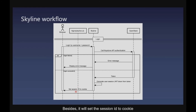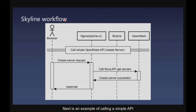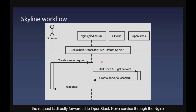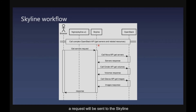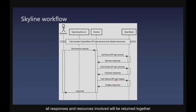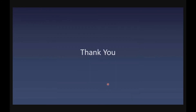If authentication is successful, Skyline will use the Keystone token to generate a user session JWT token. It will set the session ID to a cookie and return it to the browser. Next, when creating a server, the request is forwarded directly to the OpenStack Nova service through Nginx, and the success or failure response is returned. Finally, for complex APIs — when accessing server-related resources — a request is sent to Skyline, which calls multiple OpenStack APIs such as Nova, Cinder, and Glance, and all responses and resources involved are returned together.